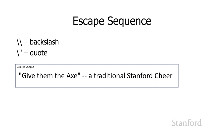Here are a couple more escape sequences you might run into. One question is: how do you represent a backslash? You can't just put a single backslash because that starts an escape sequence. So if you really want a backslash, you have to put two backslashes in a row. The first backslash is the escape character, and the next backslash — the sequence backslash-backslash — represents a single backslash.